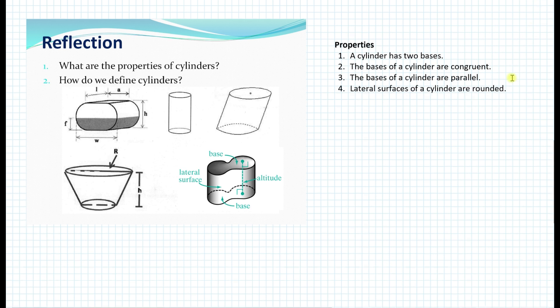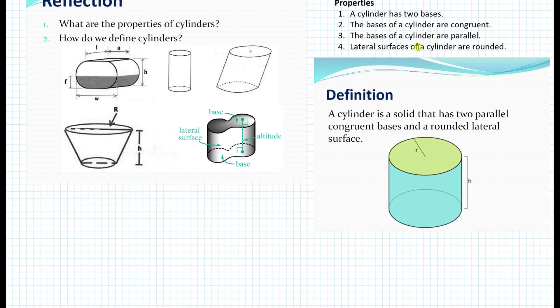And fourth, that the lateral surfaces of a cylinder are rounded. So that brings us to defining the cylinder now. We can use the properties to define the cylinder. And here's the definition.